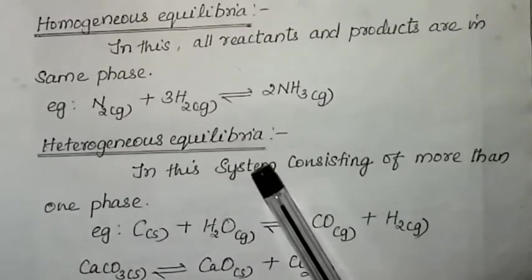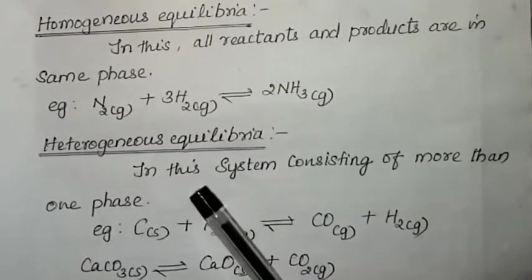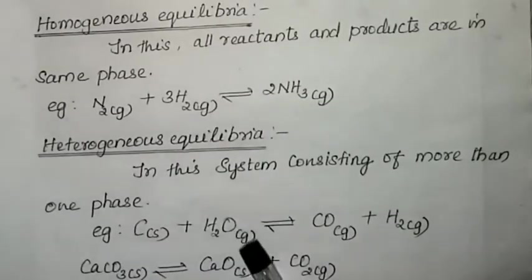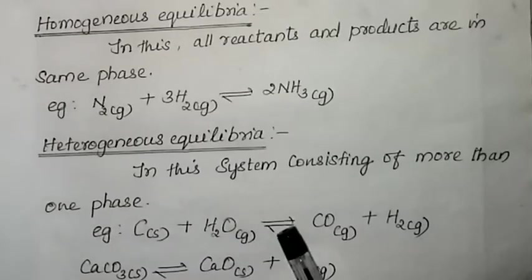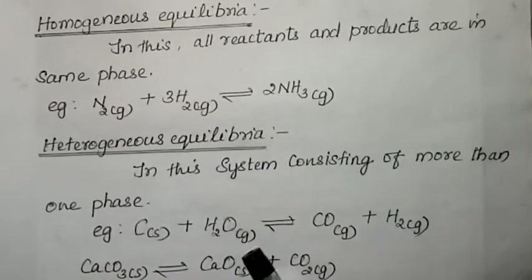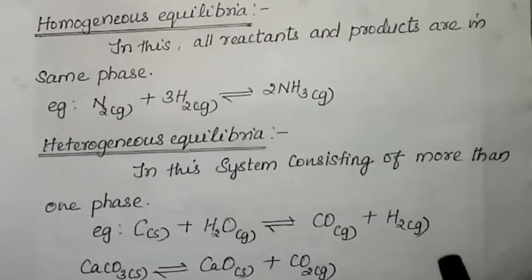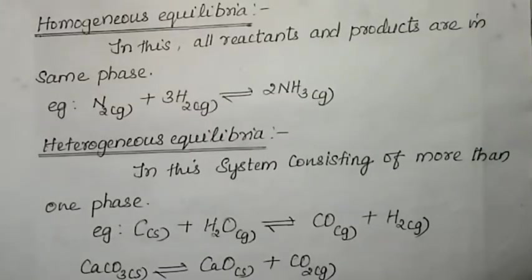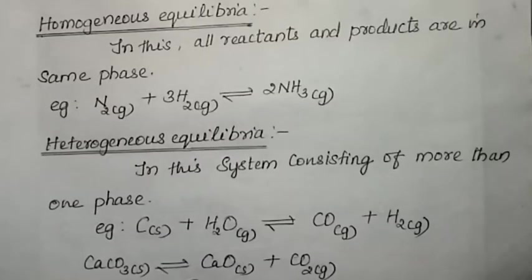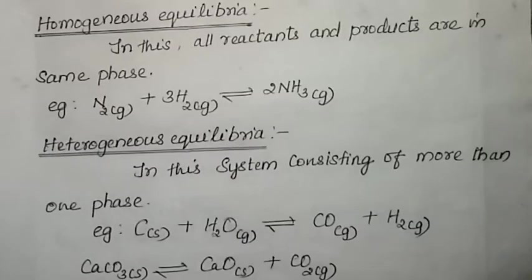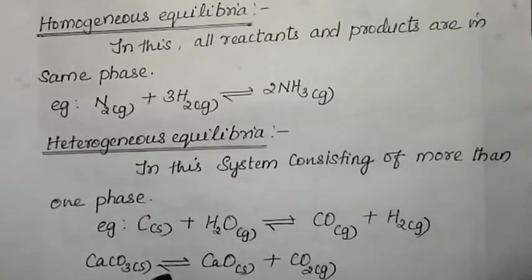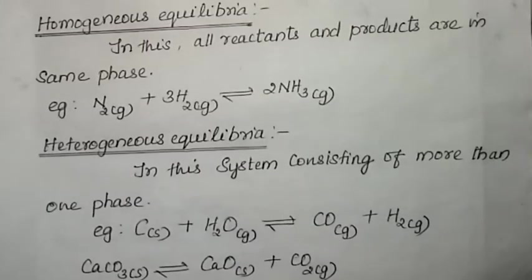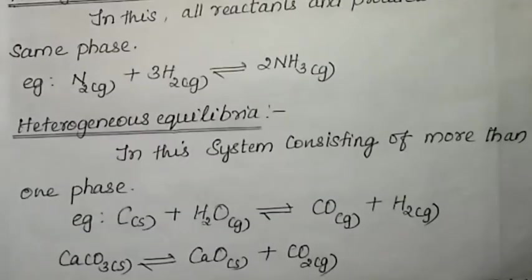Heterogeneous equilibrium involves a system consisting of more than one phase. For example, C (solid) + H₂O (gas) reversibly gives CO (gas) + H₂ (gas) — here solid and gaseous phases are present. Another example: CaCO₃ (solid) reversibly gives CaO (solid) + CO₂ (gas) on heating. The system consists of more than one phase; such equilibrium is known as heterogeneous equilibrium.